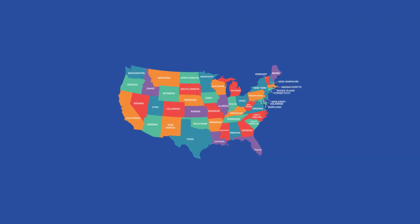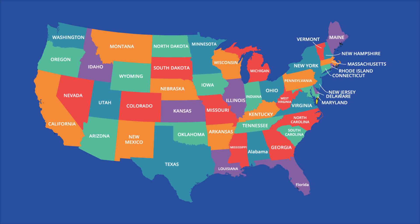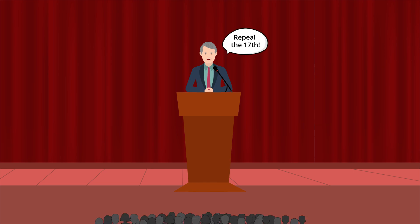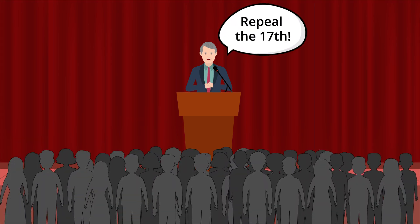Modern controversy surrounds whether it is time to repeal the 17th Amendment. In the last decade, a number of conservatives have called for its repeal because they believe it undermines the authority of the states and gives the federal government too much power. In 2004, Georgia Senator Zell Miller, a conservative Democrat, introduced a resolution calling for the repeal of the 17th Amendment after announcing his retirement. He claimed that direct elections of Senators allowed Washington's special interests to call the shots, whether it is filling judicial vacancies, passing laws, or issuing regulations, and argued that the Amendment allows special interest groups and their fundraising abilities to elect U.S. Senators. However, though the idea has come up in some campaigns, it has not become much of a voting issue.